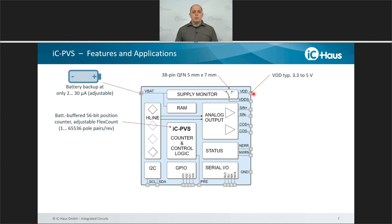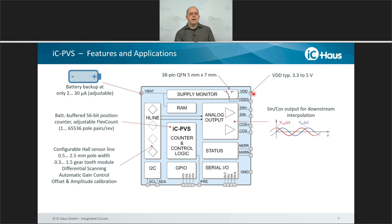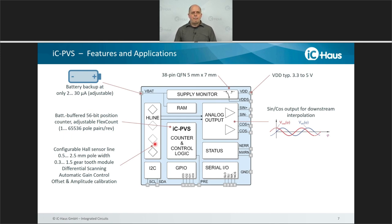The IC PVS has an internal battery buffer, a 56-bit position counter, and also incorporates an adjustable flex count engine that allows you to interpret any number of magnetic input periods from 1 to 65,536 as one mechanical revolution. The most prominent feature of IC PVS is the configurable hall sensor line, which can be configured to accommodate a pole width between 0.5 and 2.5 mm or gear tooth module from 0.3 to 1.5 mm. It comes with differential scanning, making it very robust against external magnetic stray fields, and features automatic gain control to keep amplification within the optimal range.